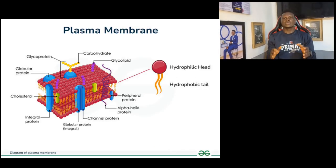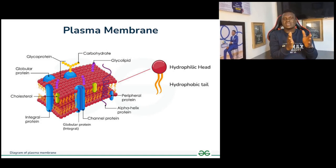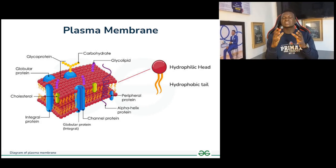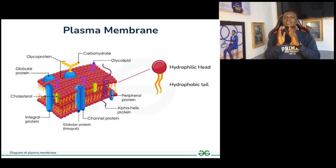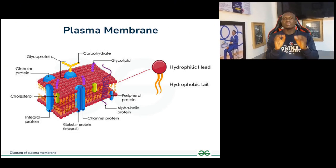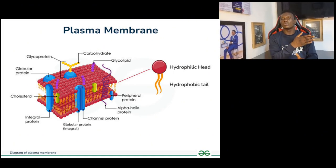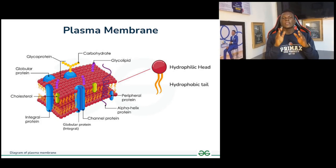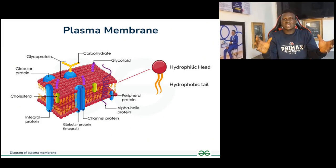Now let's talk about the cell membrane. Moving to the outside of the cell, the cell membrane is a protective structure that separates the inner cell from the external environment. Things cannot easily move into the cell due to the cell membrane. The cell membrane is selectively permeable — only specific things are allowed to enter. It is made up of the phospholipid bilayer, along with proteins and carbohydrates, including integral proteins and peripheral proteins. The cell membrane gives structural support and maintains the shape of the cell.